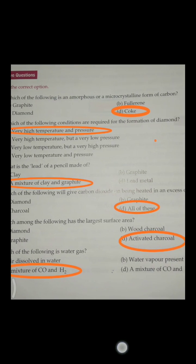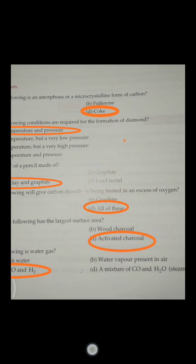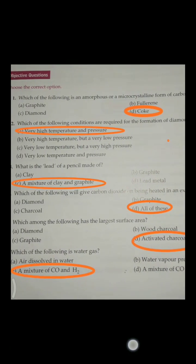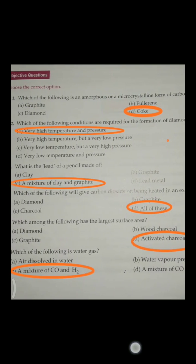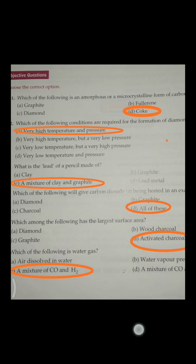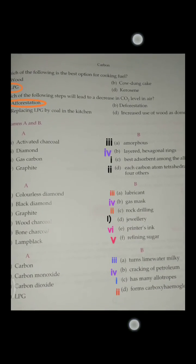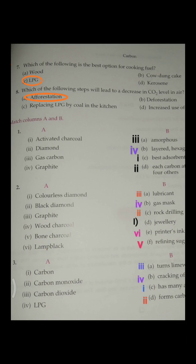Which of the following will give carbon dioxide on being heated in excess of oxygen? All of these - diamond, charcoal, graphite. Fifth, which among the following has the largest surface area? Activated charcoal. Which of the following is water gas? A mixture of carbon monoxide and hydrogen. Seventh, which of the following is the best option for cooking fuel? LPG.